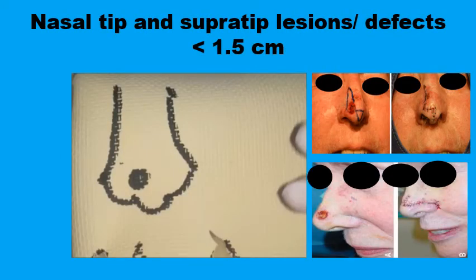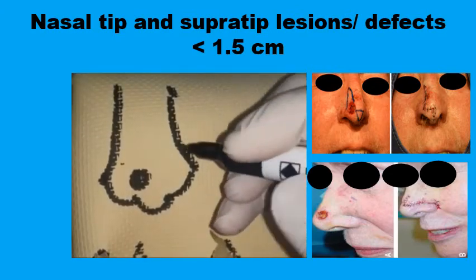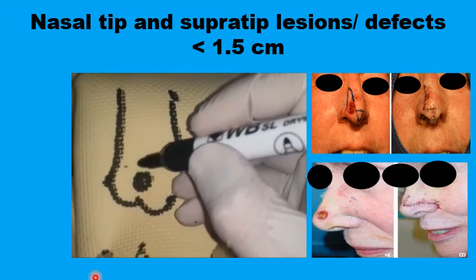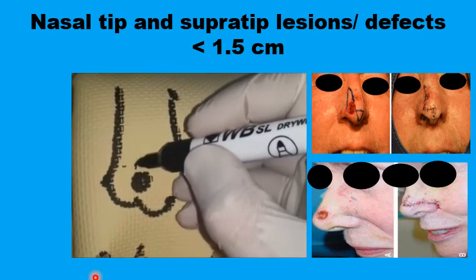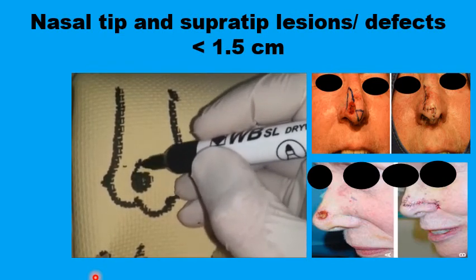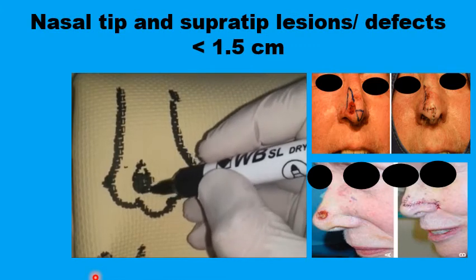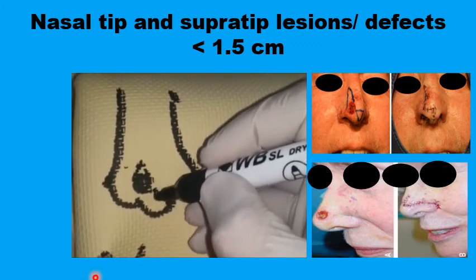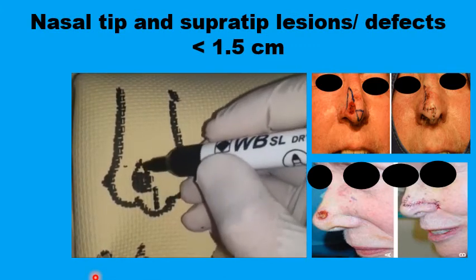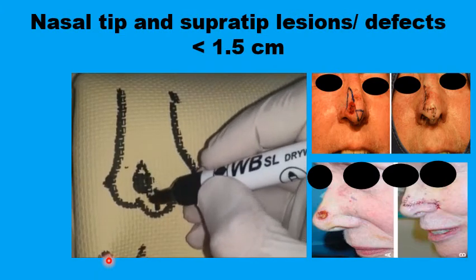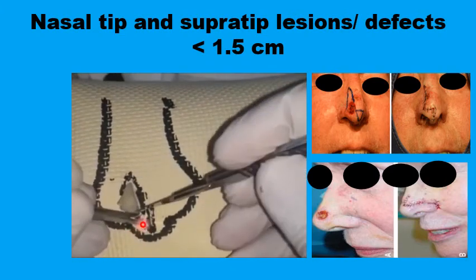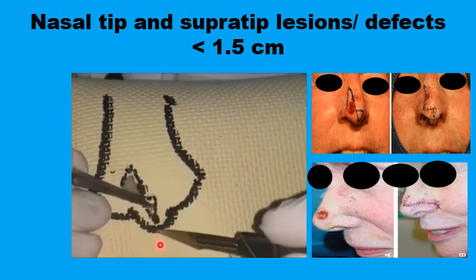A common area for the east-west flap is the nasal tip and supratip for lesions measuring less than 1.5 centimeters in diameter. For a small paramedian lesion, you can draw the primary triangle pointing superiorly, extend the line along its base, and place the secondary triangle pointing inferiorly in the midline where the scar can be more easily hidden.